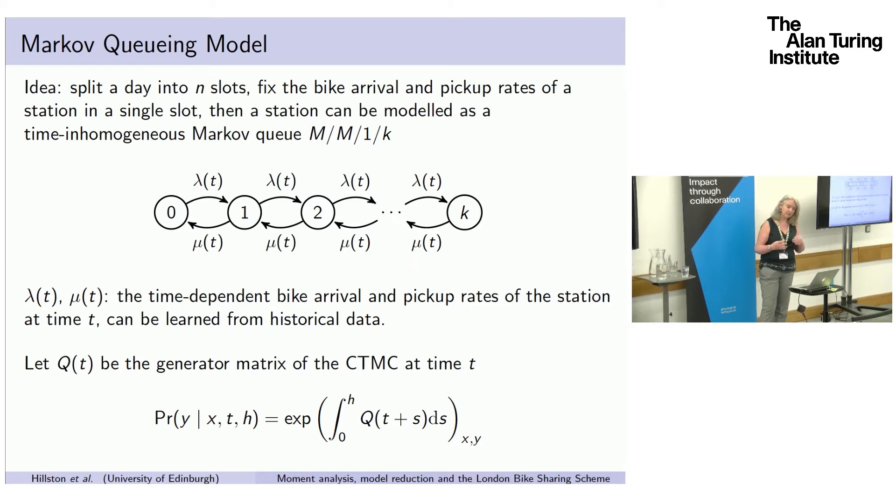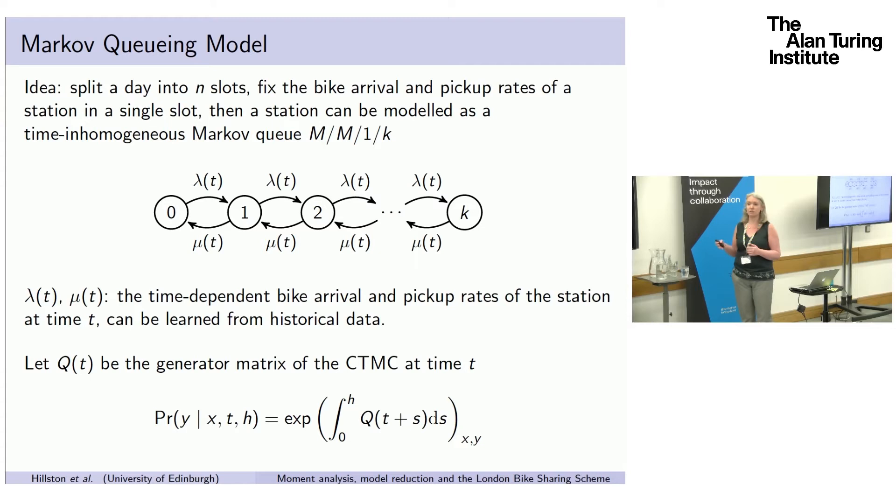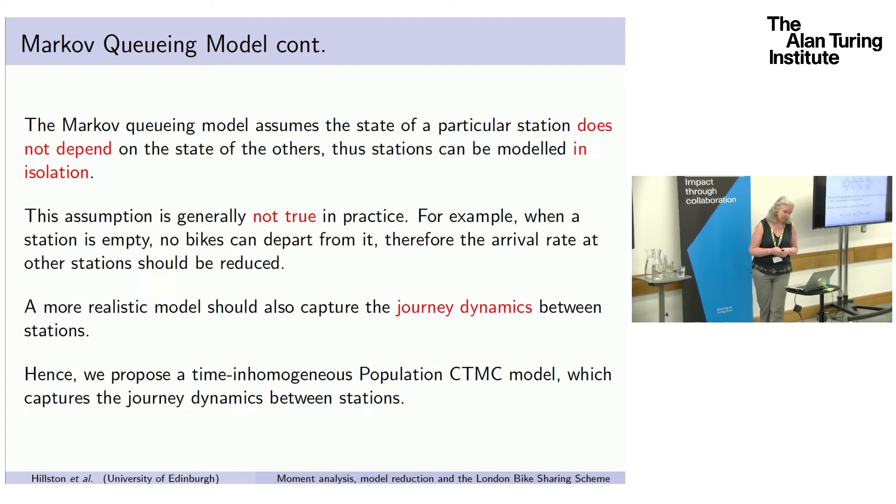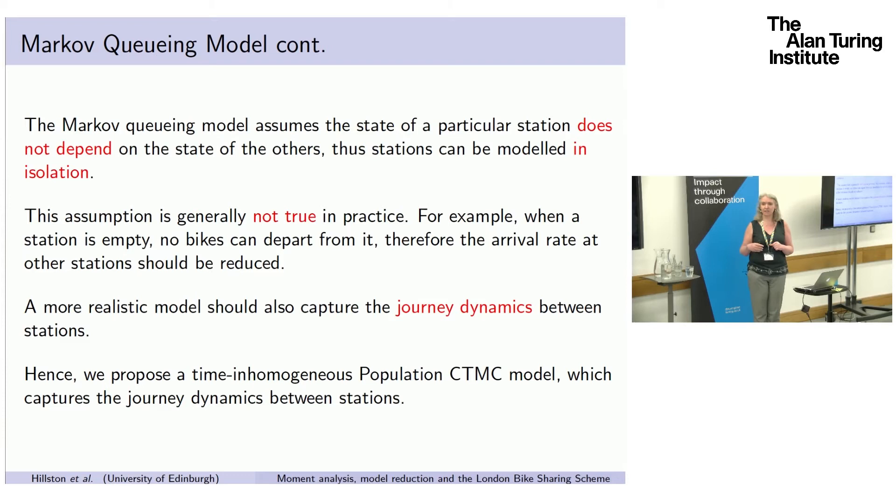Once you've built this, you're assuming that all the stations are independent of each other. You just look at data to tell you the rate at which bikes arrive and leave this station. You can make predictions based on that. But we felt this wasn't completely accurate because stations are not independent. If most bikes that end up at Trafalgar Square are people cycling from Waterloo and the Waterloo station is empty, you should see some impact on the arrival rate at Trafalgar Square. That's completely lost in the previous model.